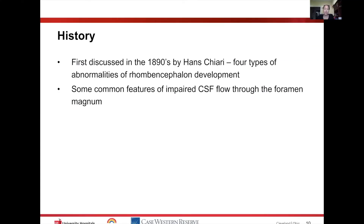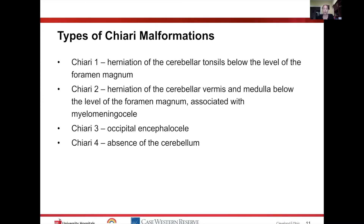The history of Chiari malformations was first discussed in the 1890s. Hans Chiari noted four different abnormalities he discovered related to rhombencephalon development, and many of them shared common features of impaired CSF flow through the foramen magnum. He coined those four different types.